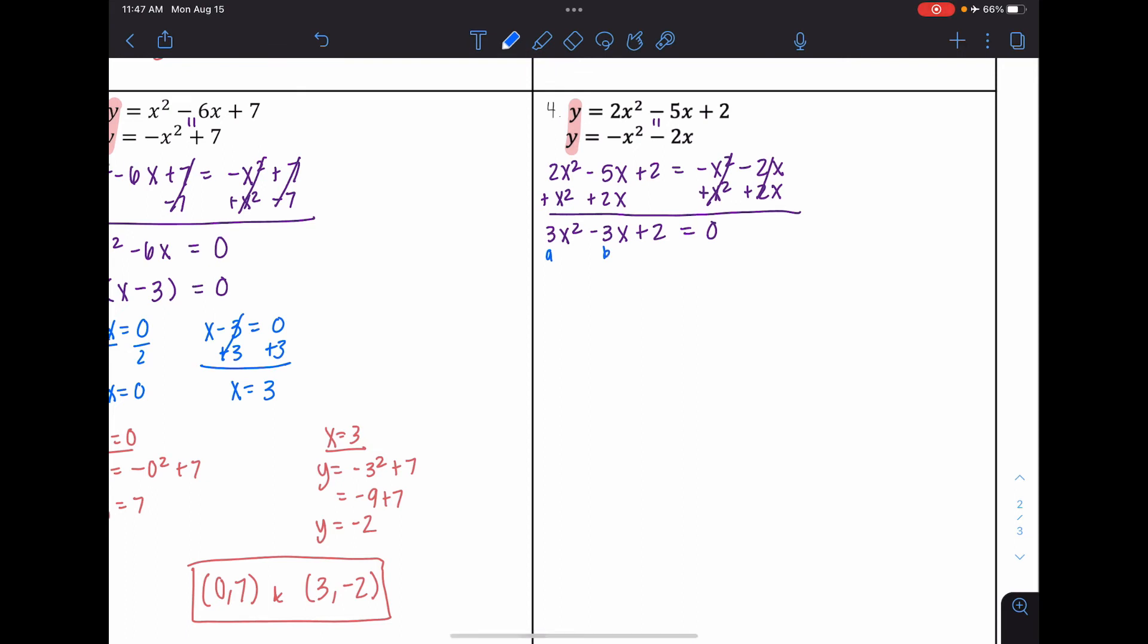I'll label my A, B, and C. A reminder, the quadratic formula is negative B plus or minus the square root of B squared minus 4AC all over 2A. So my B value here is negative 3, so the opposite of negative 3 is positive 3 plus or minus B squared. So negative 3 squared minus 4 times A, which is 3, times C, which is 2, all over 2 times A, which is 3.